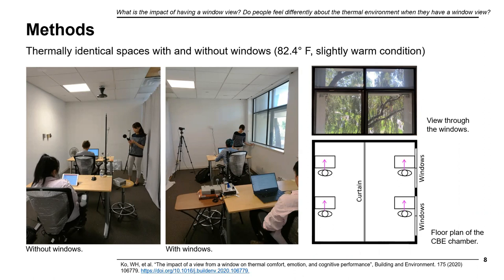We were able to achieve minimal contribution of daylight — no direct sunlight coming in while we were running. The diffuse daylight was the only contribution, and the light level of both rooms was about the same, around 400 lux. In the window room, a lighting fixture in the ceiling plus diffused daylight from the window both contributed to that light level, but the daylight contribution was minimal.